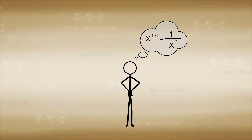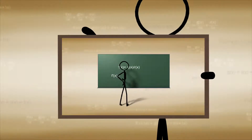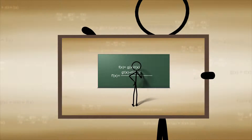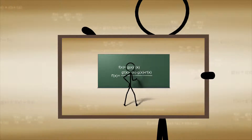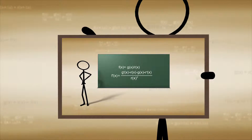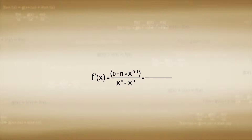With this simple property, we can find the derivative of x raised to a negative exponent by simply recalling our division example and remembering that where f is equal to g over r, the derivative of f is equal to the derivative of g times r minus the derivative of r times g, all over r times r. In this case, that means the derivative of f is equal to 0 minus n times x raised to n minus 1, all over x raised to n times x raised to n, which is equal to negative n over x times x raised to n.